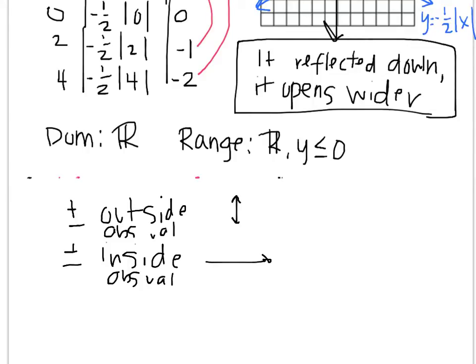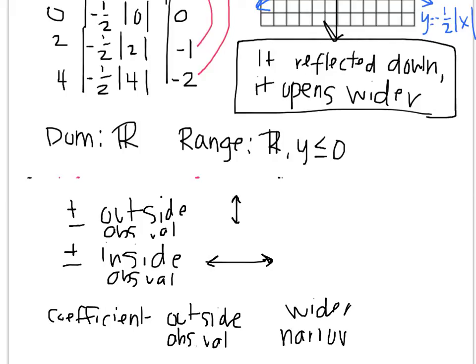And when you have a coefficient, and it's obviously going to be outside, or it could be outside, it could be inside. So let's say a coefficient outside the absolute value. Then it makes it either wider or narrower. And we will certainly do more examples of these when I see you next.